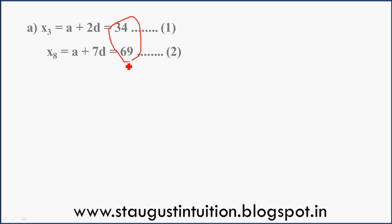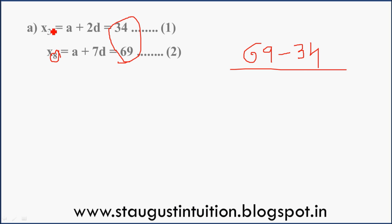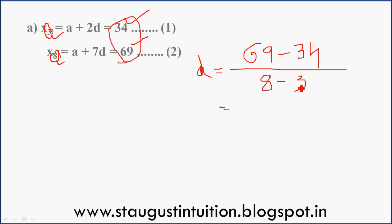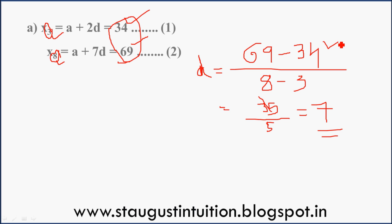First method — a very simple formula. d equals (69 minus 34) divided by (8 minus 3). That is 35 divided by 5, which equals 7. The answer is 7. That is the common difference.